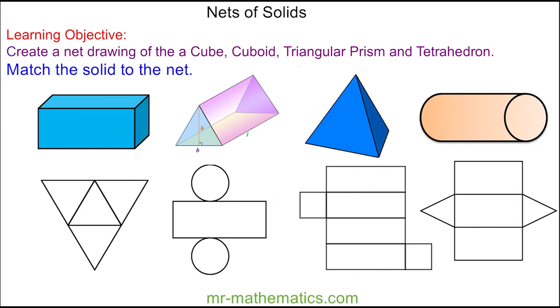Welcome to our lesson on the nets of solid shapes. We're going to imagine how each of these four solids can be opened up to its net, and we'll begin with a cuboid. You can see we have four rectangular faces, two at the front and back and two at the top and the bottom.